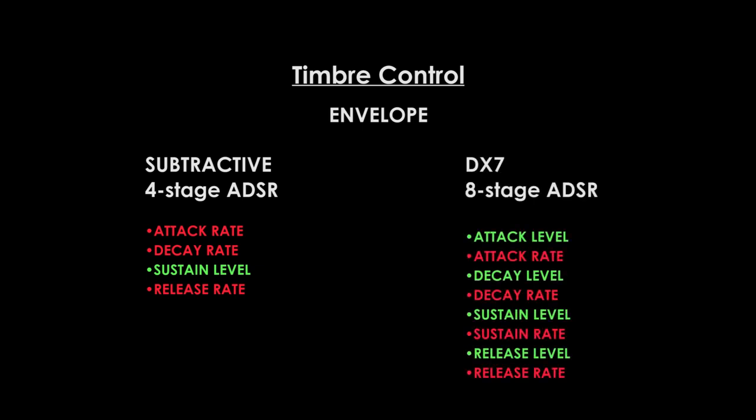Finally, let's use the envelope. Most subtractive synths have four stage envelopes, only controlling the speed of the attack, decay, and release, and the level of the sustain. The DX7 has an eight stage ADSR envelope which allows you to set the level for ADSR and also the rate. I often program my DX7 envelopes for four stage programming like my subtractive synths — it's faster to use and easier to follow when I don't require full eight stage ADSR control. I'll cover envelopes in a dedicated video later in the series.